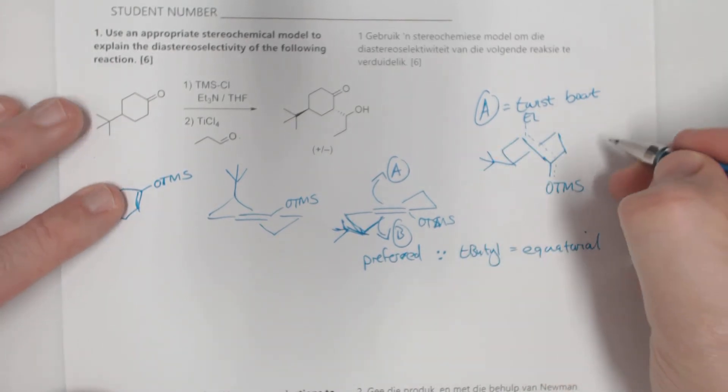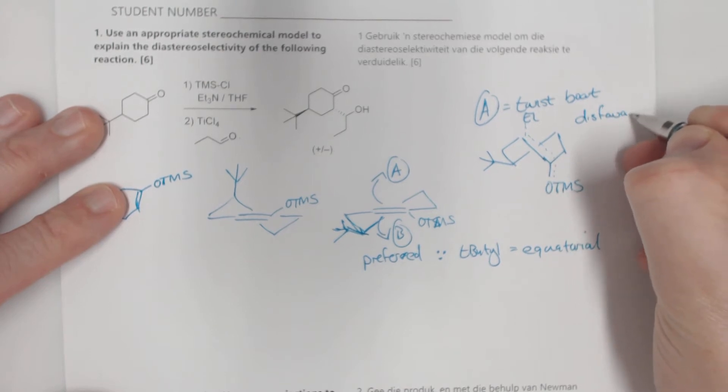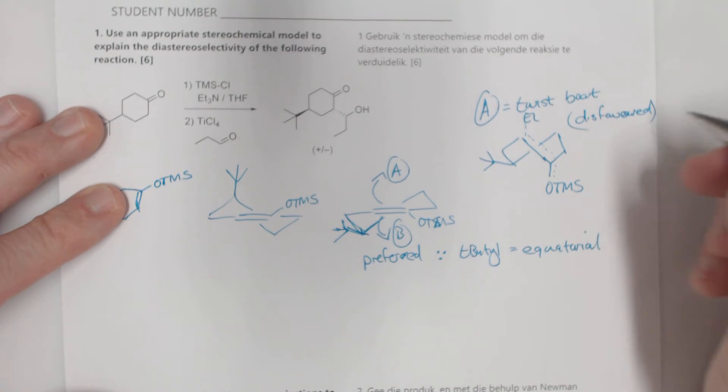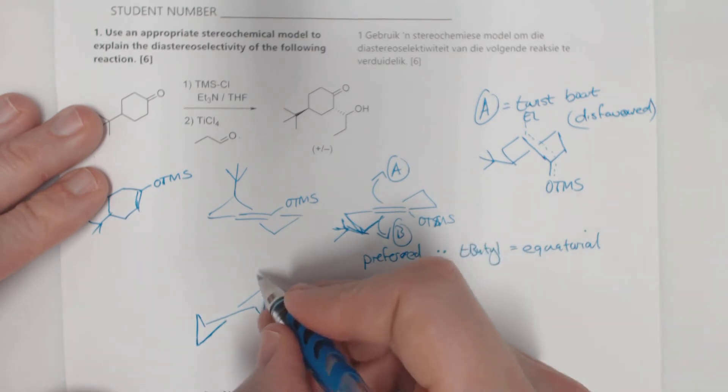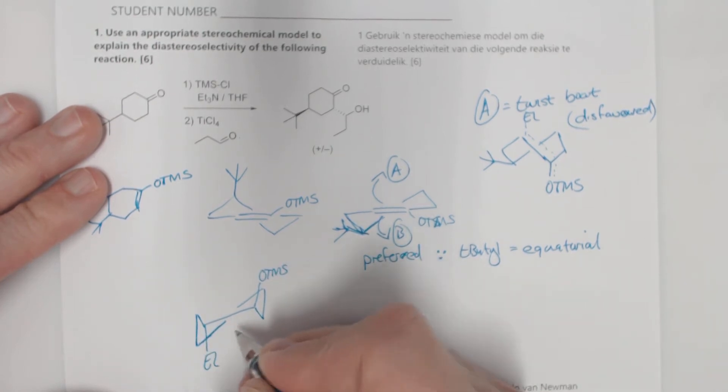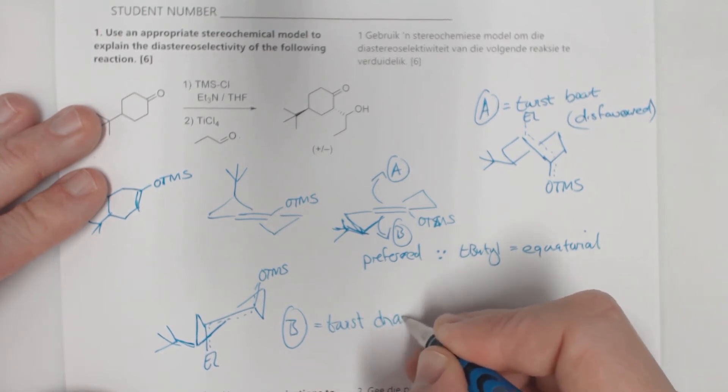So that's the correct twist boat which is disfavored. And then the other one is the twist chair. That one is going to be a little bit like this. The TMS group, it gets a bit messy, but this would be the OTMS over here, the electrophile, and over there is where the t-butyl group is on that one. So B equals twist chair and this is favored.